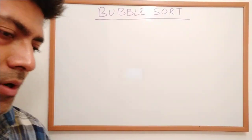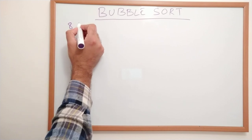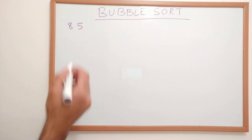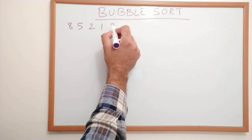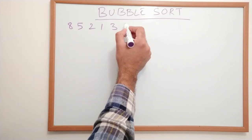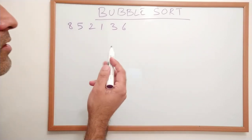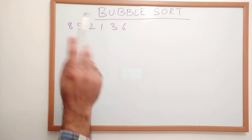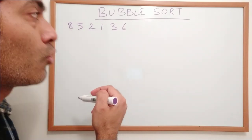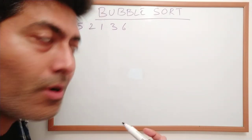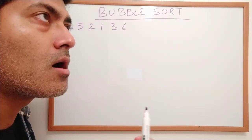Let us say we are trying to sort some numbers: 8, 5, 2, 1, 3, and 6. This is a very good example because in this particular list we have the biggest item, which is 8, at the very first position. Let us see how many iterations we need to do and how many comparisons we need to do per iteration.